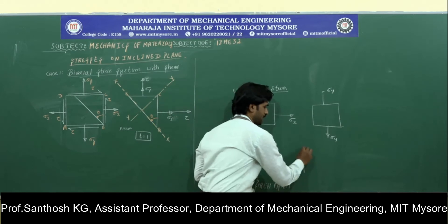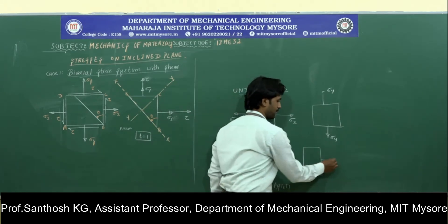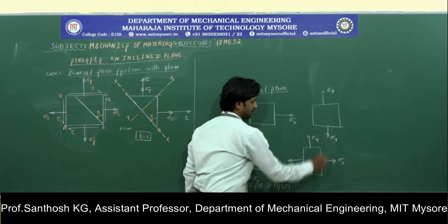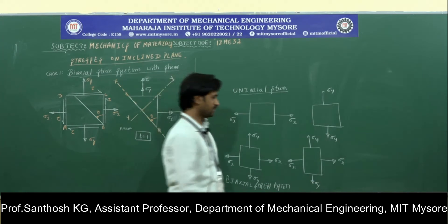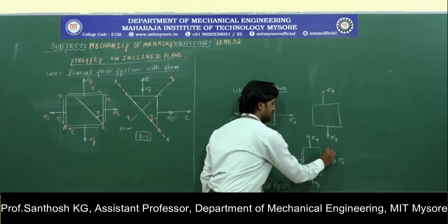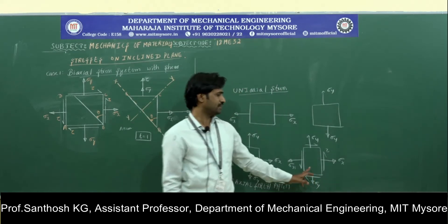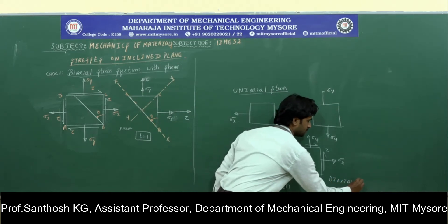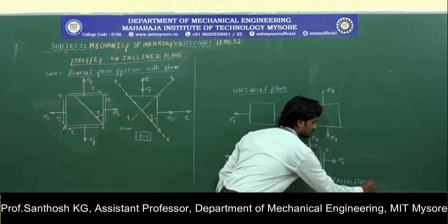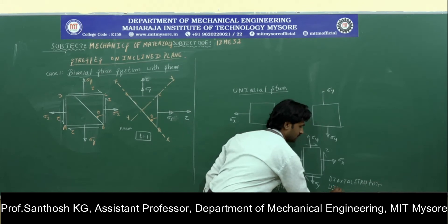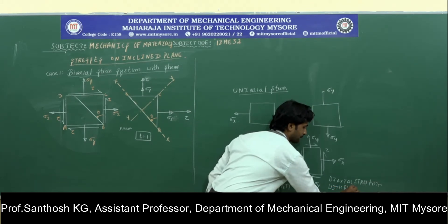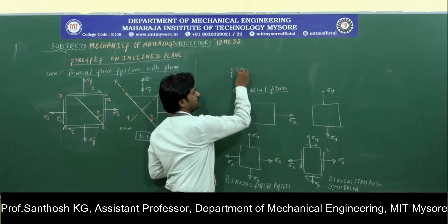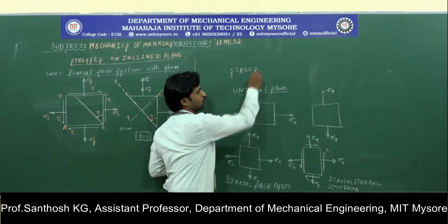If I take a member and apply normal stresses sigma x and sigma y in two different directions, and along with that I also apply a shear stress on the member, then such a member is said to be under a biaxial stress system with shear. These are the different types of stress systems we have in the case of a two-dimensional member.